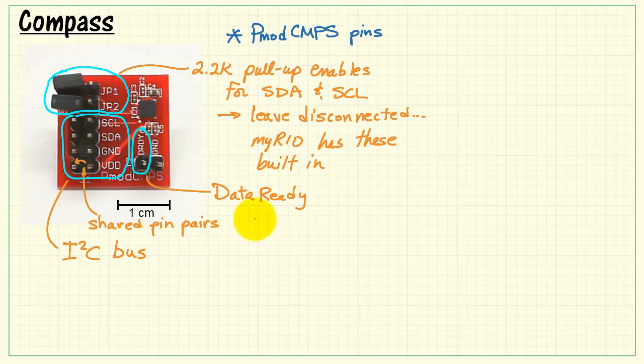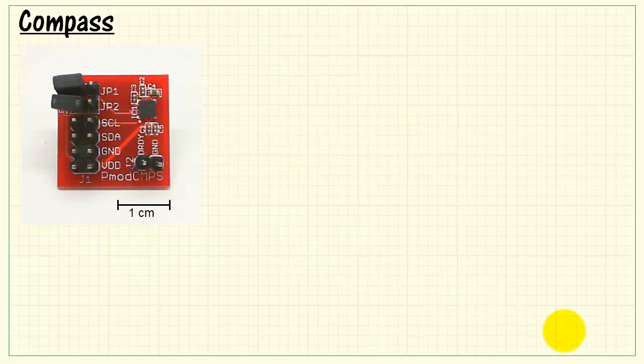Here we have the data ready line. This is an open drain style output that is active low and the PMOD compass board includes a pull-up resistor that pulls that signal to be normally high.